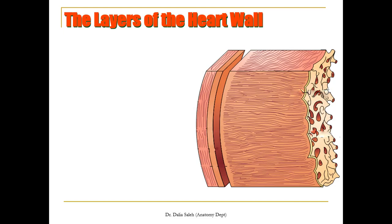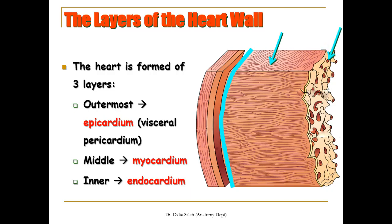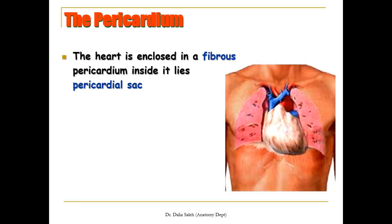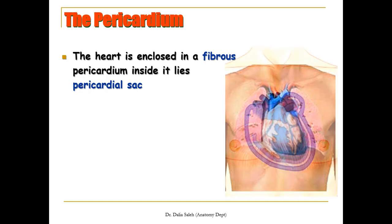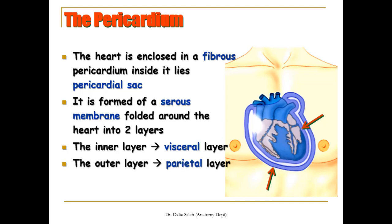If we take a section through the heart wall, we have an outermost layer called the epicardium, made of the visceral pericardium; a middle thick layer called the myocardium, formed by cardiac muscle; and an inner lining called the endocardium. The first layer covering the heart from outside is made of fibrous tissue — we call it the fibrous pericardium. 'Peri' means around, 'cardium' means heart. Inside the fibrous pericardium lies a serous sac called the serous pericardium, folded upon itself into two layers: the inner visceral layer, which lies close to the heart surface, and the outer parietal layer, which lines the fibrous pericardium from inside.